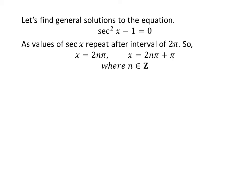As we know the values of sec x repeat after the interval of 2π, the general solutions are x = 2nπ and x = 2nπ + π where n is an integer.